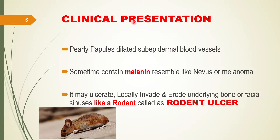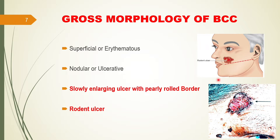Regarding clinical features, the site is from the angle of mouth to the pinna of the ear, so it can be seen at the tip of the nose or over the cheek. Initially it could present as a papule, which gradually develops into a nodule and then an ulcer. Sometimes it contains melanin black pigment, so it can resemble or mimic a nevus or melanoma - but it is a mimic only, as it is pigmented BCC. The ulcer may erode the underlying bone or facial sinus, nibbling the underlying tissue like a rodent, and that is why it is known as a rodent ulcer.